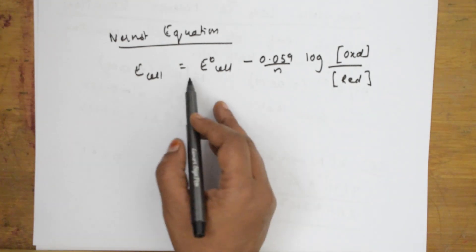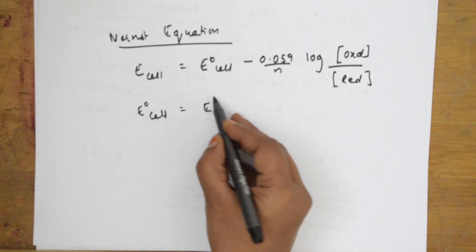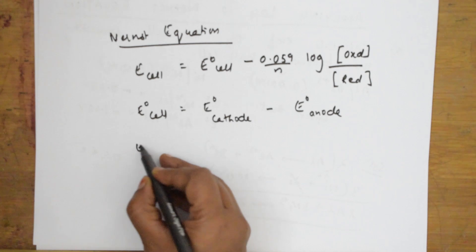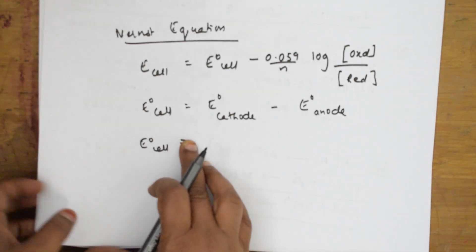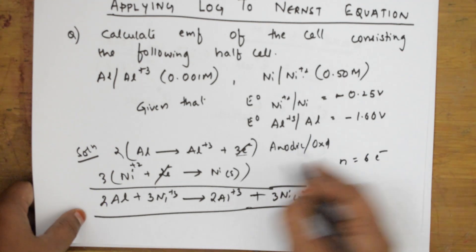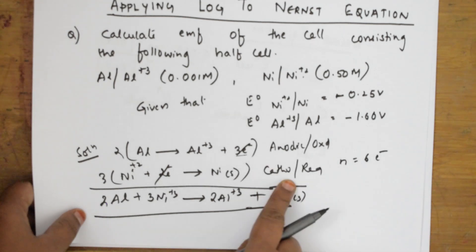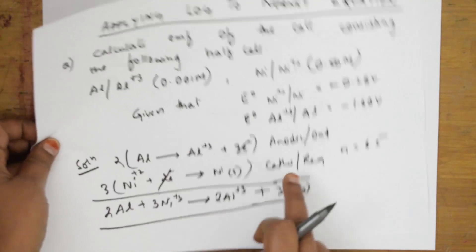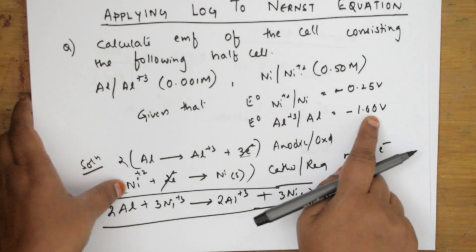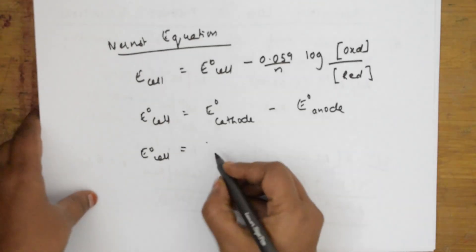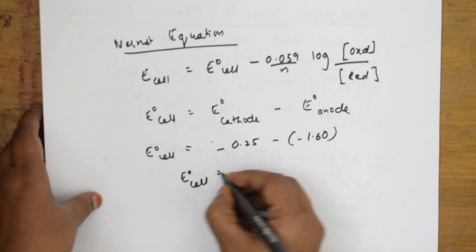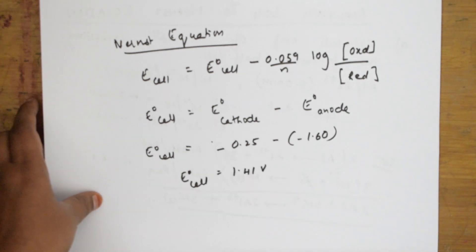First, I need to find E°_cell using the formula: E°_cell = E°_cathode − E°_anode. The cathodic reaction is nickel with E° = −0.25 V, and the anodic reaction is aluminium with E° = −1.60 V. So E°_cell = −0.25 − (−1.60) = 1.41 V.